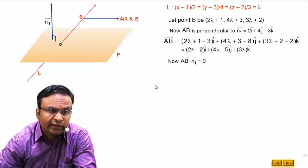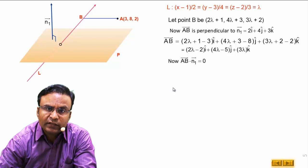AB dot n1 is equal to 0 because these two vectors are perpendicular.